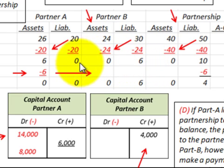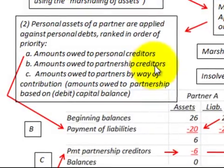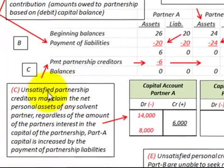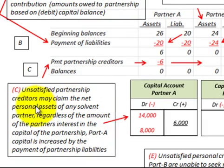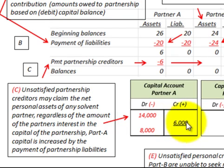In the marshalling of assets concept, the only partner with any remaining balance is Partner A, who has $6,000 remaining in assets. The unsatisfied partnership creditors may claim the net personal assets of any solvent partner — that's Partner A. Partner A's capital account is increased by their payment of the partnership liabilities. Partner A had a capital account of negative $14,000; paying $6,000 toward partnership liabilities increases their capital account by $6,000, resulting in a net capital balance of negative $8,000.